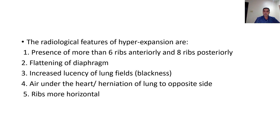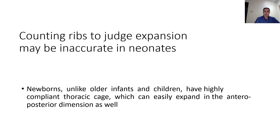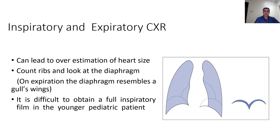Other signs of hyperexpansion include flattening of the diaphragm, increased lucency of lung fields, air under the heart or herniation of the lung to the opposite side, and more horizontal ribs. While counting ribs is important to judge expansion, it may be inaccurate in neonates because neonates have a compliant chest, so expansion may occur in the anteroposterior diameter rather than the superior-inferior diameter.